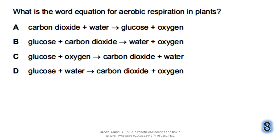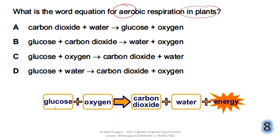Question 8: what is the word equation for aerobic respiration in plants? Aerobic means oxygen is present as a reactant. In aerobic respiration, glucose is broken down combined with oxygen inside the mitochondria to release carbon dioxide, water, and energy used by plant cells. The answer is C: glucose + oxygen → carbon dioxide + water.